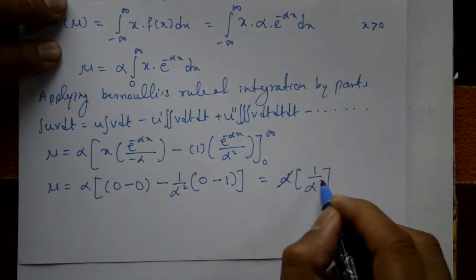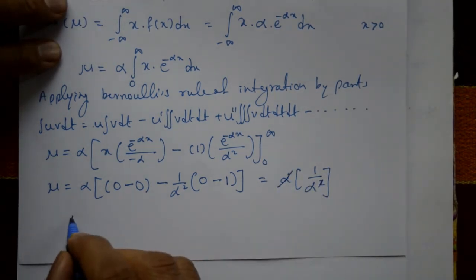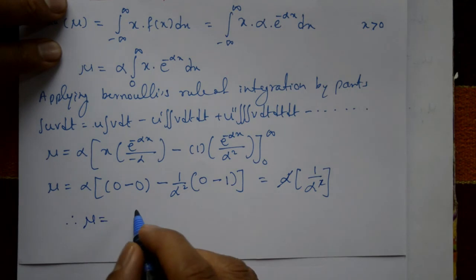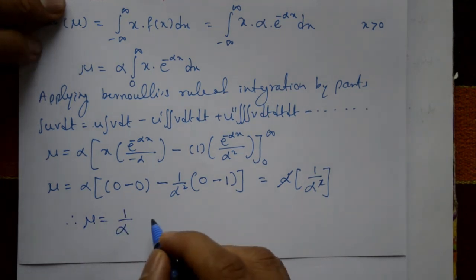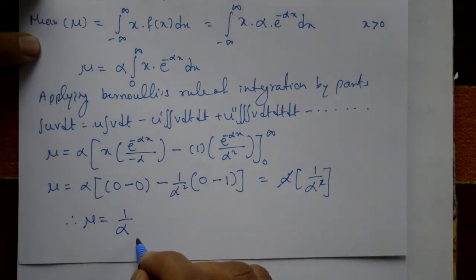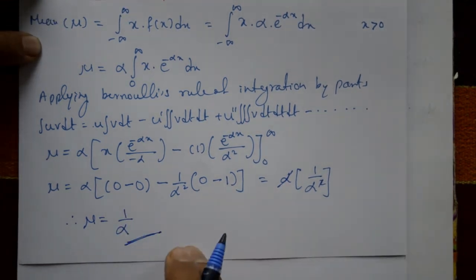This equals minus into minus, plus α into 1 by α squared. Now one α cancels. Therefore, the mean μ is equal to 1 by α. This is the mean of the exponential distribution.